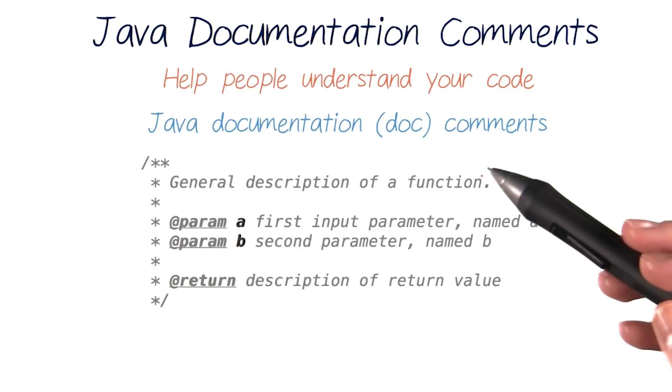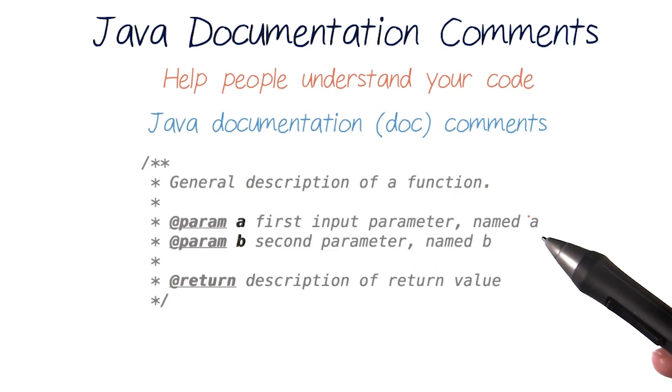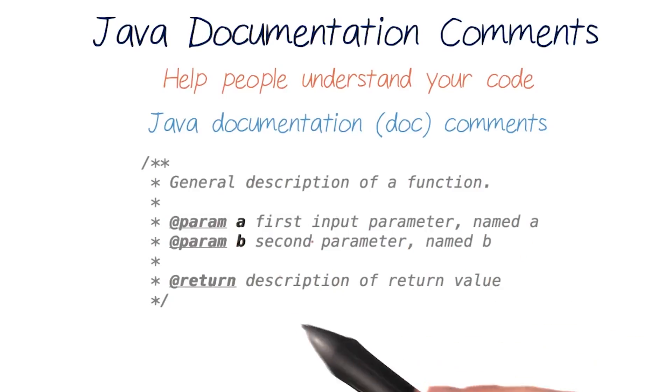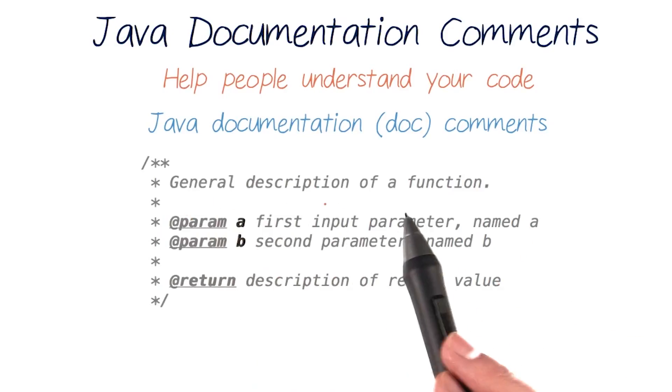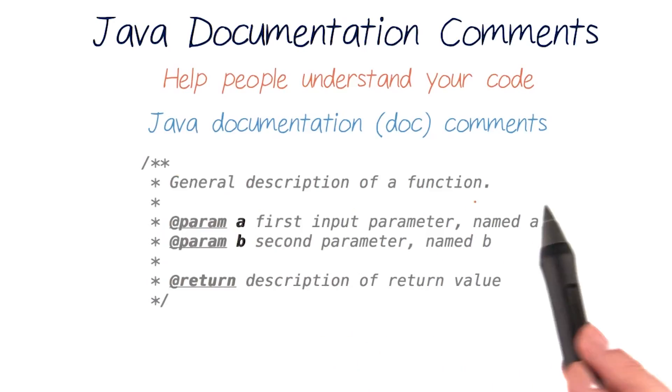Most importantly, this kind of comment lets you divide up a general description of your function, description of any parameters it may need, and a description of its return value if it has one. The general description always goes at the top of one of these comments.